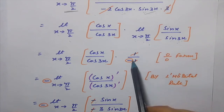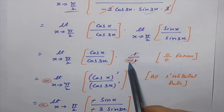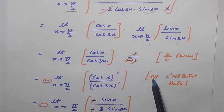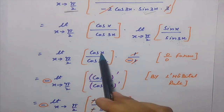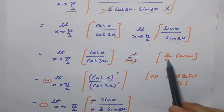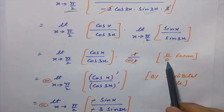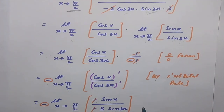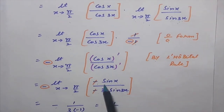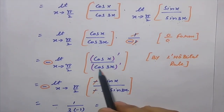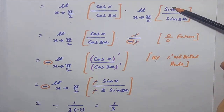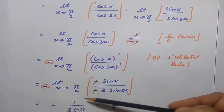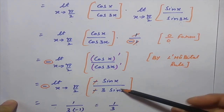We now apply L'Hôpital's rule to the remaining limit of cos(x)/cos(3x) as x approaches π/2, since it is 0/0 form. Differentiating: cos(x) gives minus sin(x), and cos(3x) gives minus 3·sin(3x). With minus 1 already present, when we approach π/2: sin(π/2) is 1 and sin(3π/2) is minus 1. The minus signs cancel, and the final answer is 1/3.